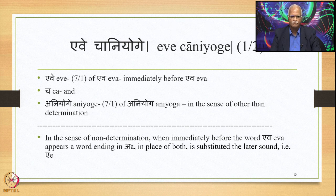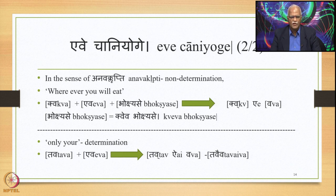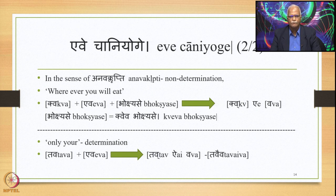Here are examples. In the sense of anavakalupti (non-determination), expressed through 'wherever you will eat' — where there is no determination of the place of eating — you have kva (a separate pada), followed by eva (another pada), followed by the verb bhokshyase: kva eva bhokshyase. Now kva plus eva is within the scope of Vriddhi Sandhi, but because of this Vartika, Vriddhi Sandhi will not take place.